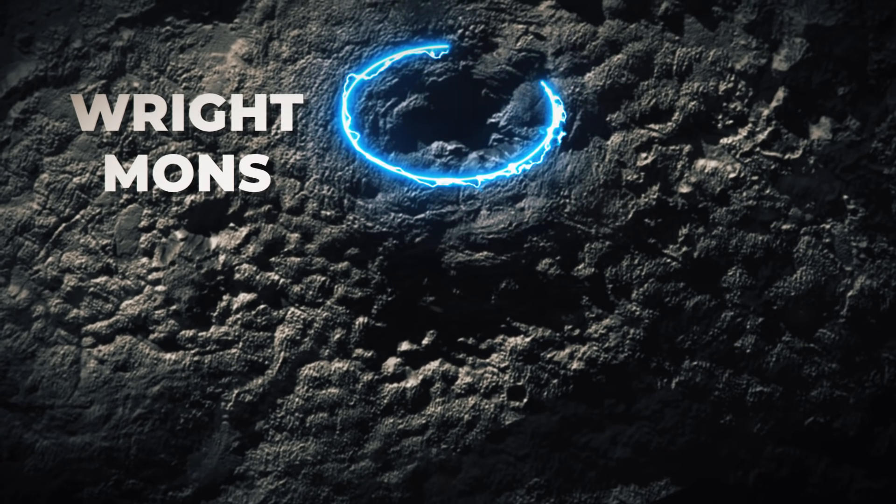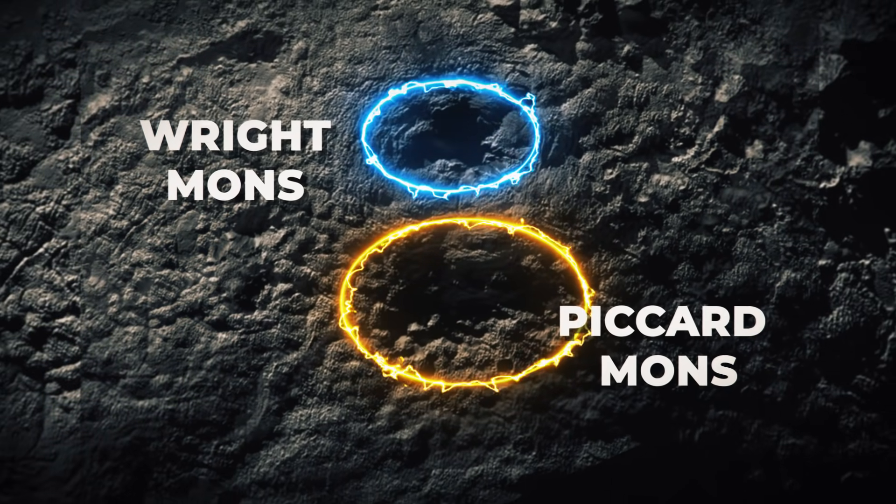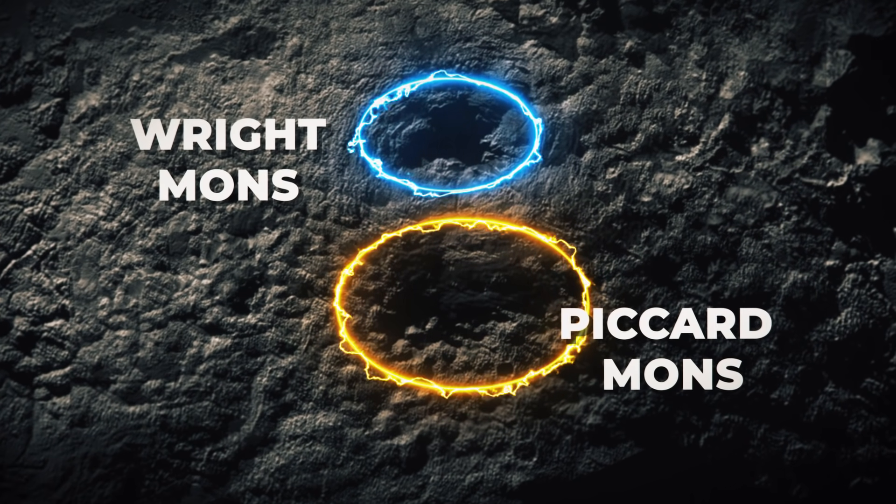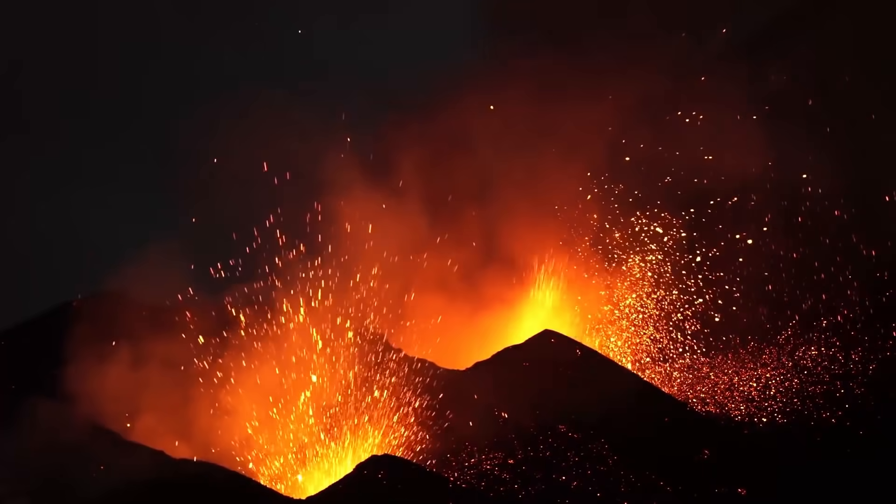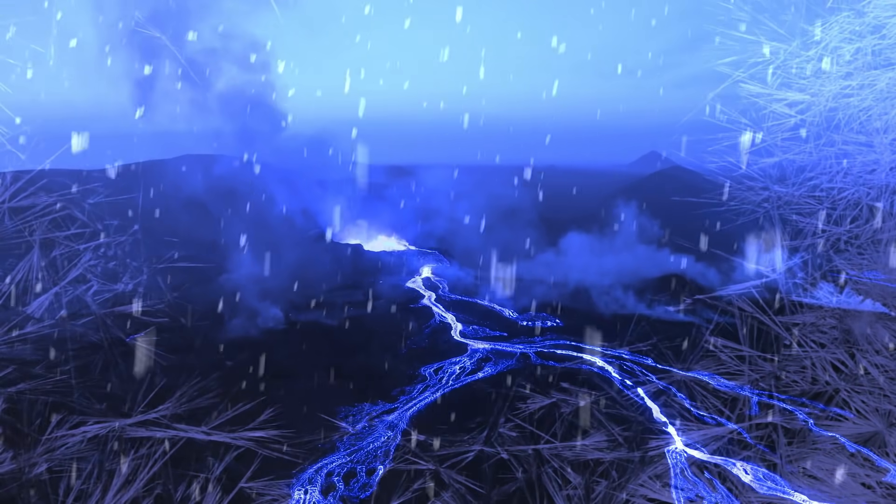The two peaks, named Wright Mons and Picard Mons, tower as high as five or six kilometers above the planet's surface, with rims more than 150 kilometers across. Instead of hot lava, like in Earth's volcanoes, flowing ice would spew forth from these massive mountains.